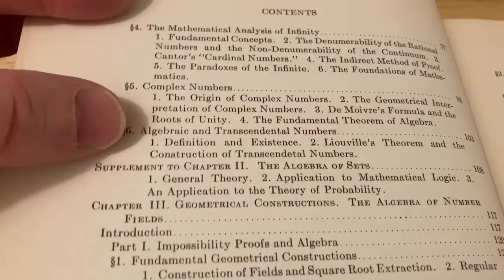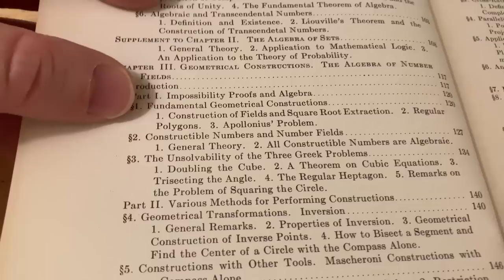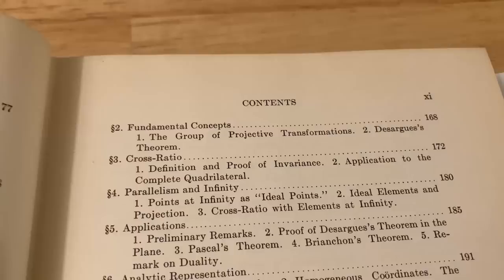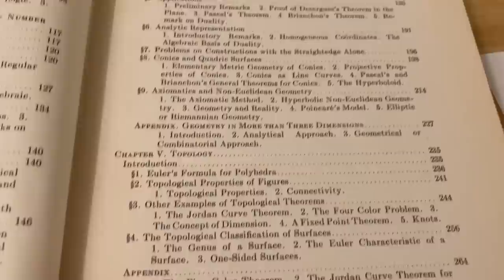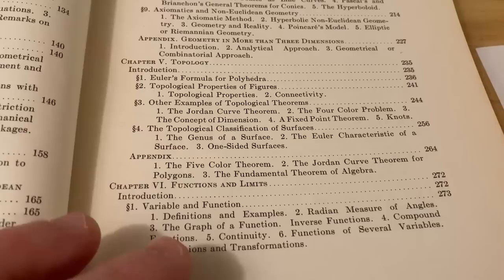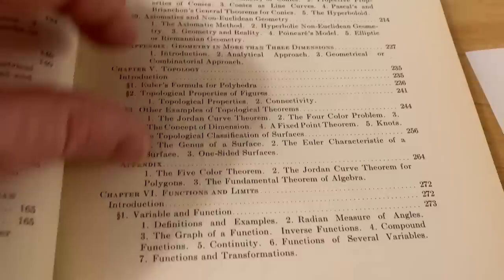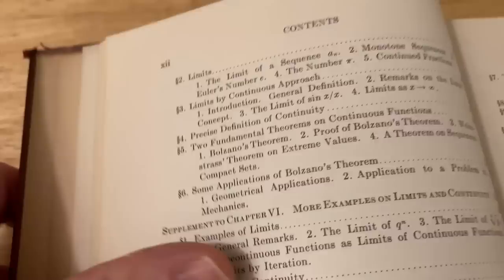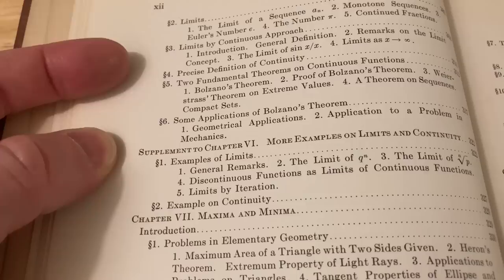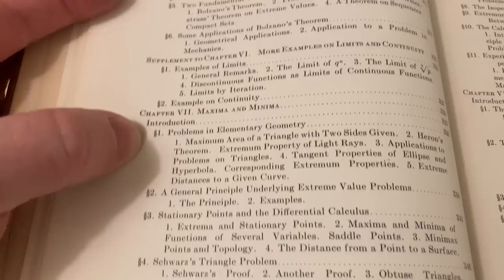Here he talks about the number system. Let's turn the page. This is that section on the mathematical analysis of infinity. Complex numbers, algebraic and transcendental numbers. It talks about sets. Geometrical constructions. All kinds of topics here. Projective geometry. Here's some more topics here. Just all kinds of things that you wouldn't expect to find. Topology. He talks about topology in this book. Functions and limits.